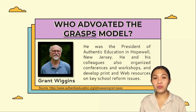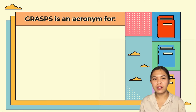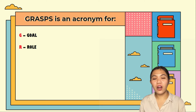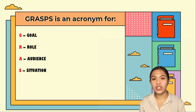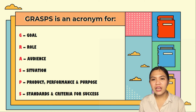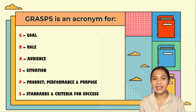Now let's find out what GRASPS stands for. GRASPS is an acronym: G for goal, R for role, A for audience, S for situation, P for product, performance, and purpose, and S for standards and criteria for success.